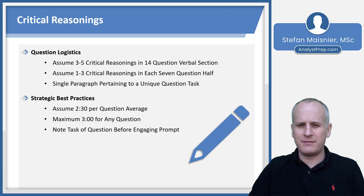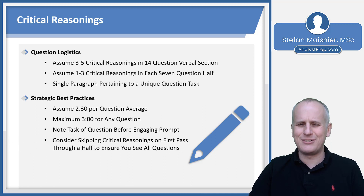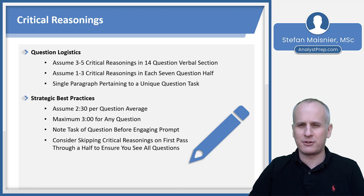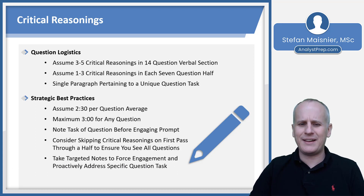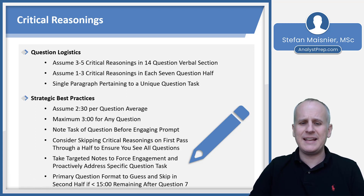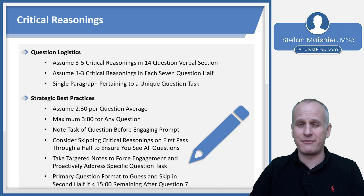You'll want to note the task of the question before even beginning to engage the paragraph prompt, and you'll consider skipping critical reasoning questions on the first pass through a half to ensure you see all of the questions of that half. Remember that you can't skip and return on the EA, so if you're having trouble finishing either of the two halves, you may decide to skip over the critical reasoning questions on the first pass, get all of the sentence corrections, and get all of the questions pertaining to the reading comprehension passage before engaging these usually more time-consuming question formats.